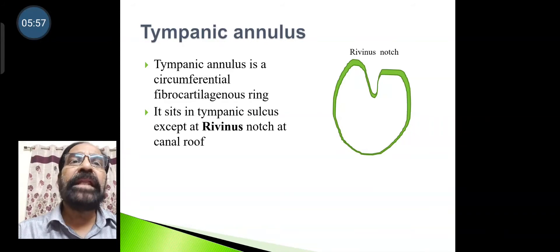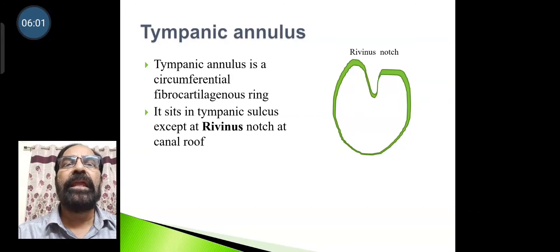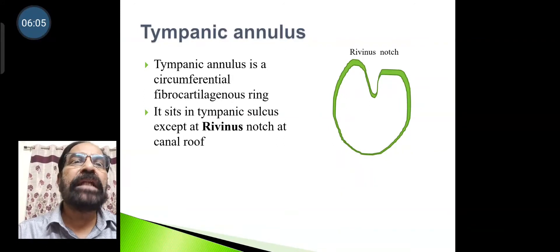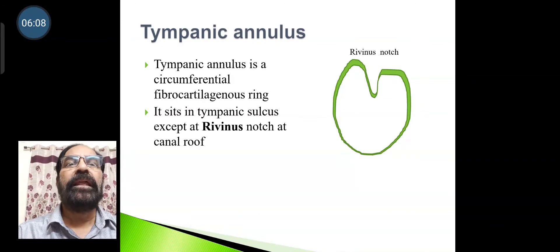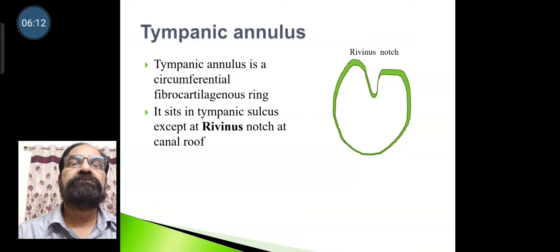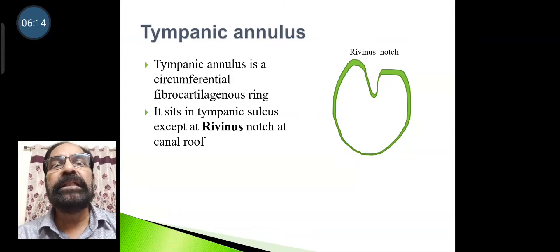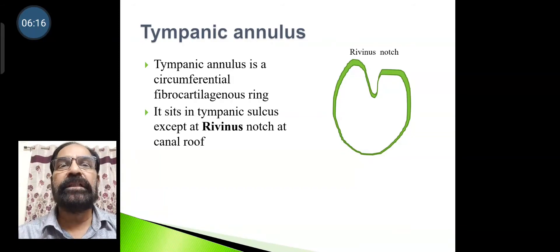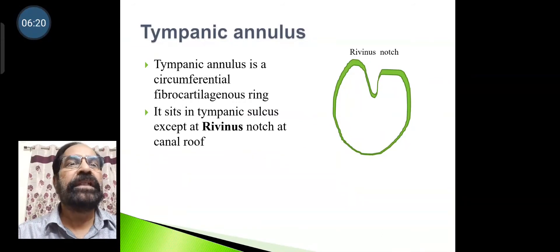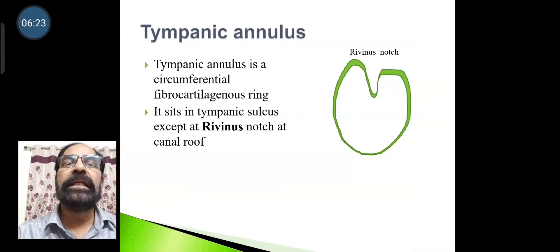The tympanic annulus is a circumferential fibrocartilaginous ring. It sits on a tympanic sulcus, except at the Rivinus notch at the canal roof, as seen in the picture.